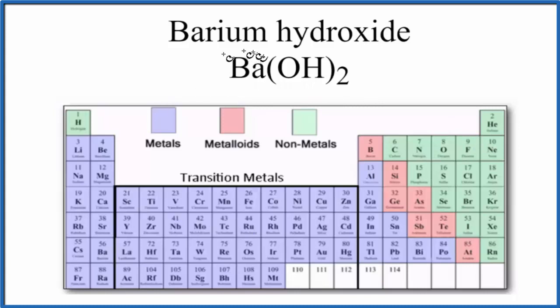So we can look at the periodic table and find barium, which is right here. Barium is a metal. Look at oxygen, that's a non-metal. So we said barium's a metal, oxygen's a non-metal.